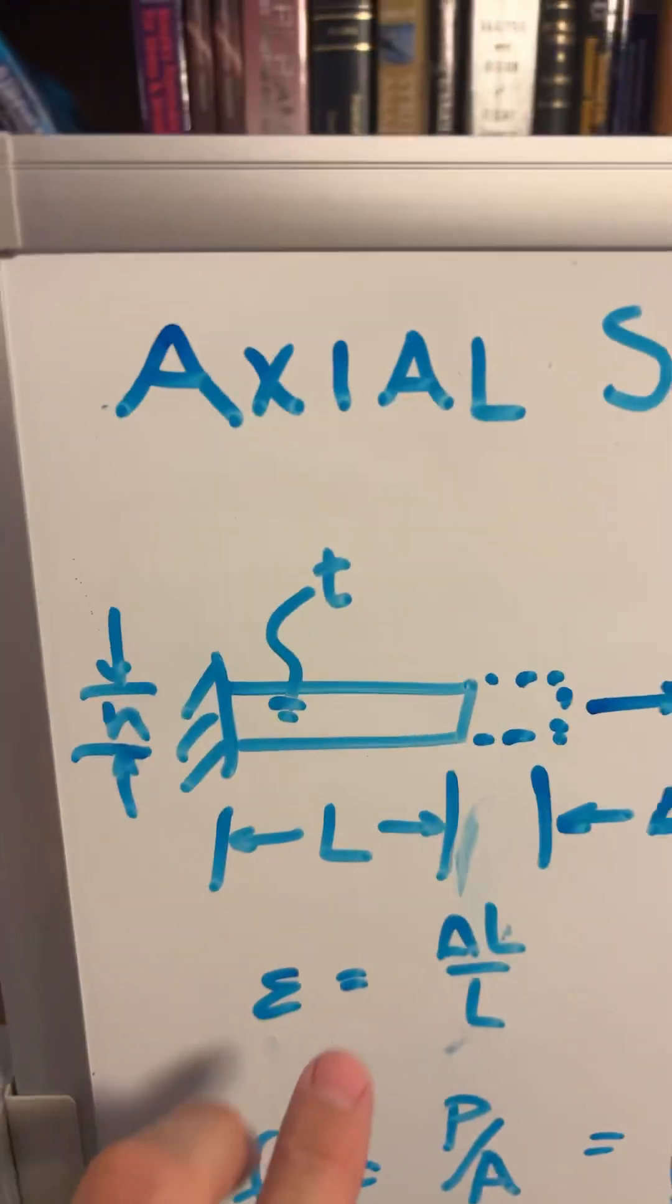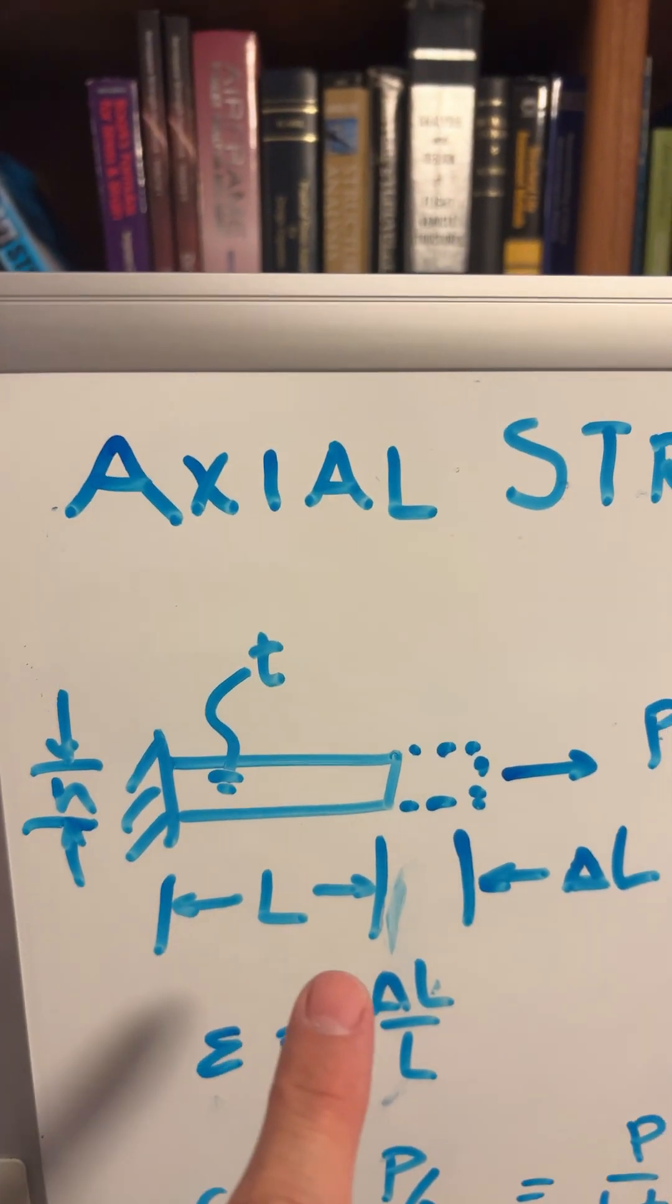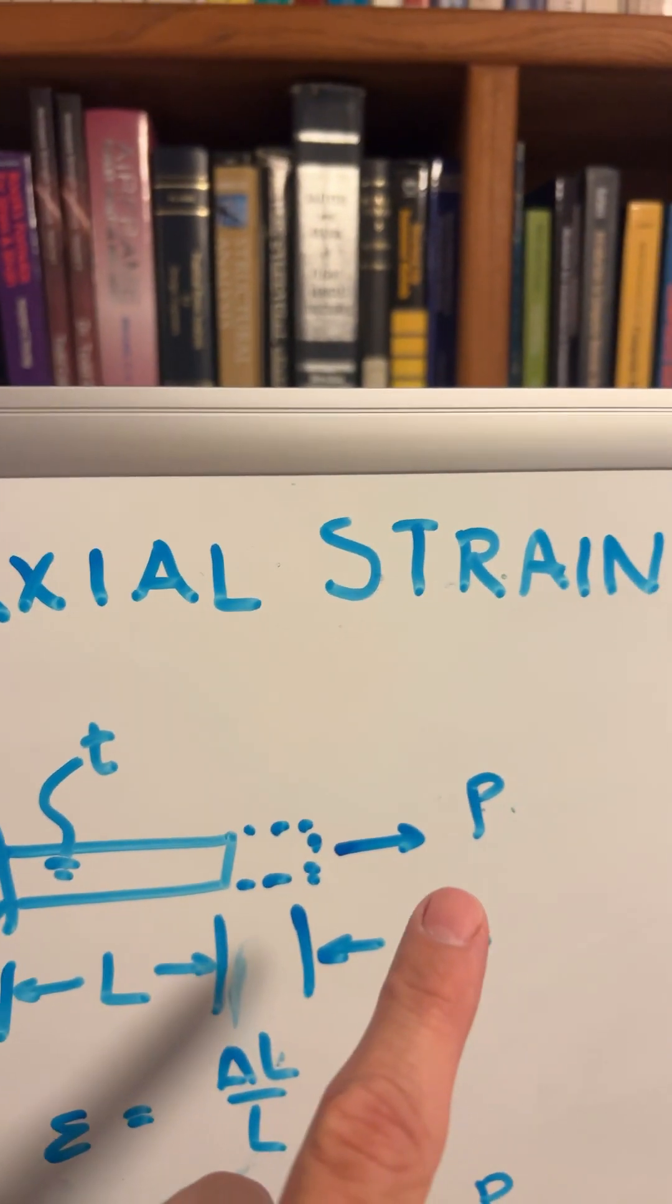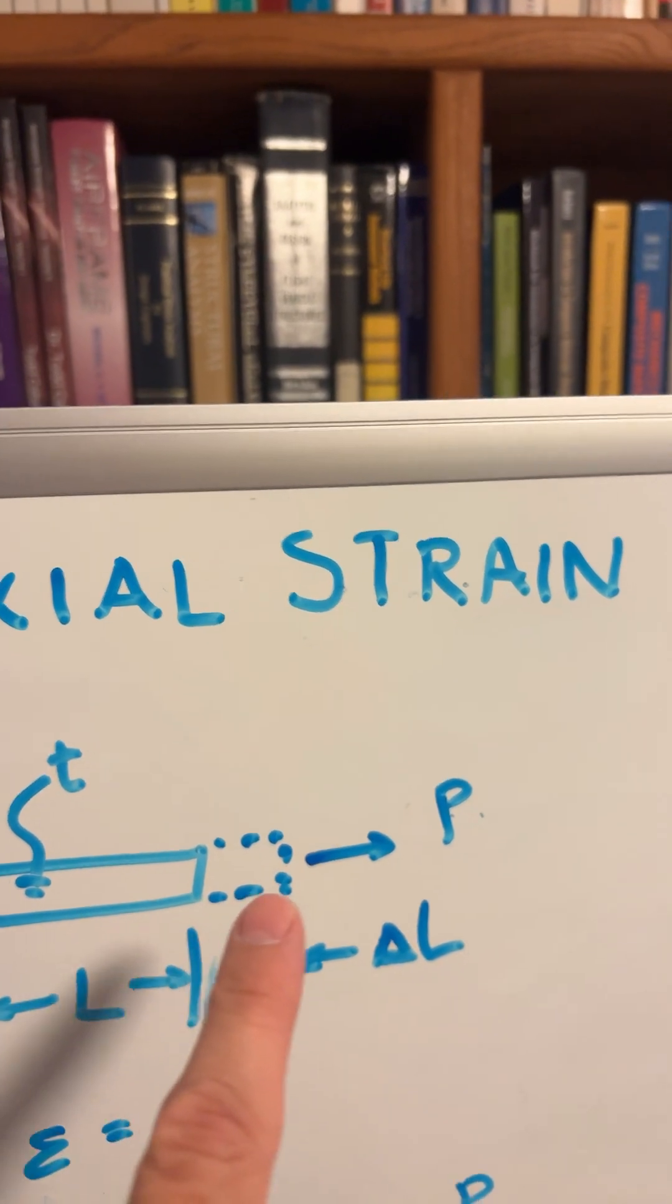Axial strain. Let's say we have a rod of length L, dimensions H and T. We pull on it with a force P, and it gets longer.